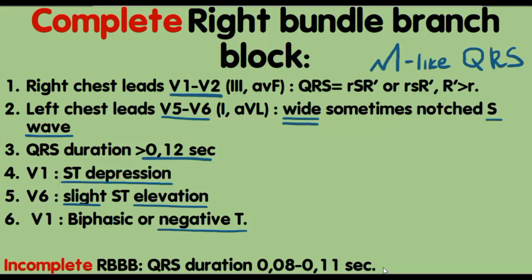The incomplete right bundle branch block has a similar ECG picture but the QRS duration is from 0.08 to 0.11 seconds. If you like the content press like and subscription buttons. Have a good day!